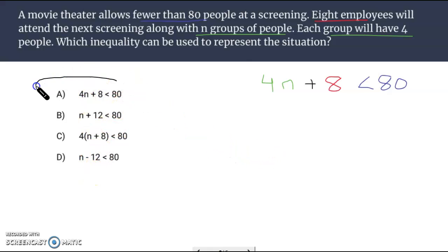Which inequality can be used to match this situation? Looking at all the inequalities here, it looks like A is our winner. 4N plus 8 less than 80. 8, the number of employees that will attend. Less than 80. Fewer than 80. And 4 times N standing for 4 people for each number of groups.